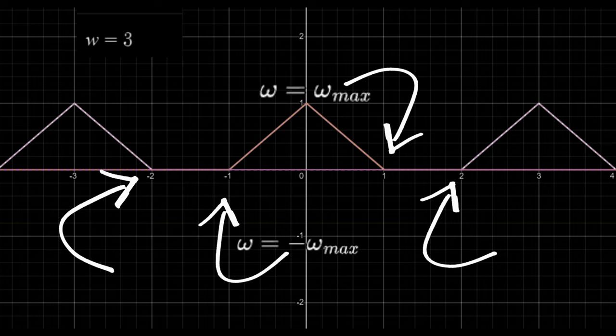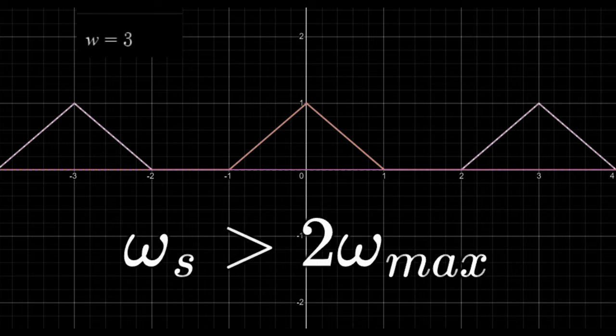The clone to its right is centered around omega equals omega s, and so it starts at omega s minus omega max. If we require that omega end is smaller than omega start and rearrange, we will get our final condition. And this is exactly Nyquist and Shannon's theorem from the beginning of the video.